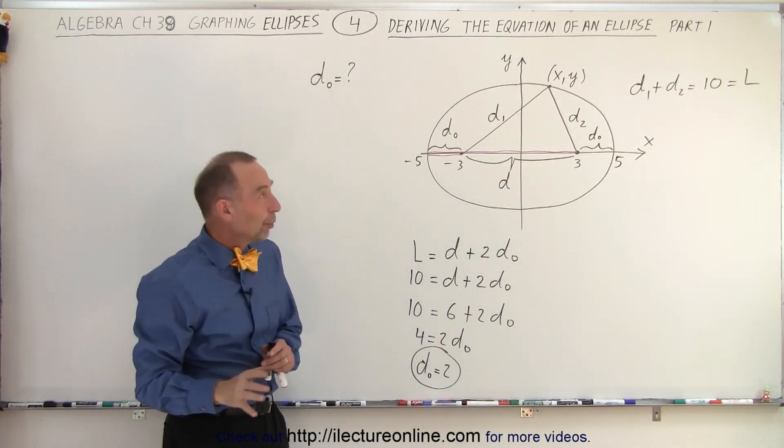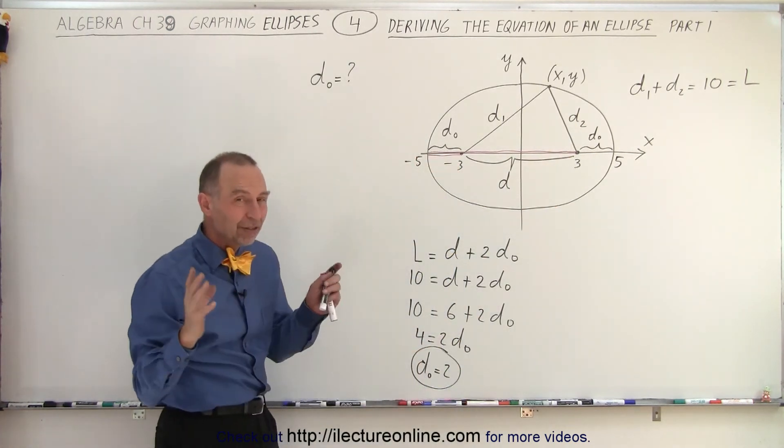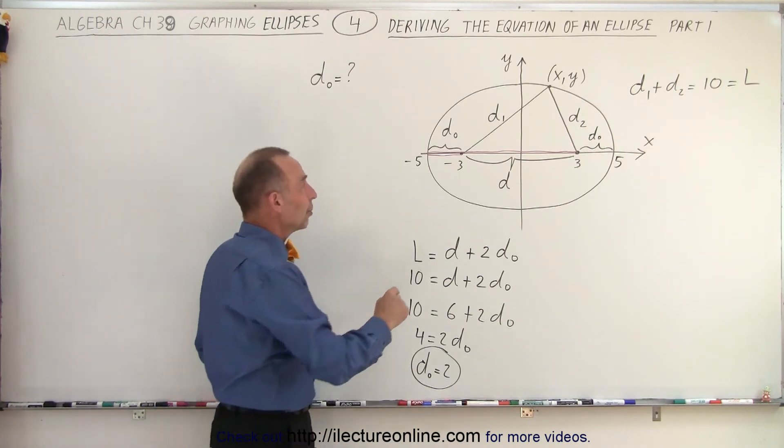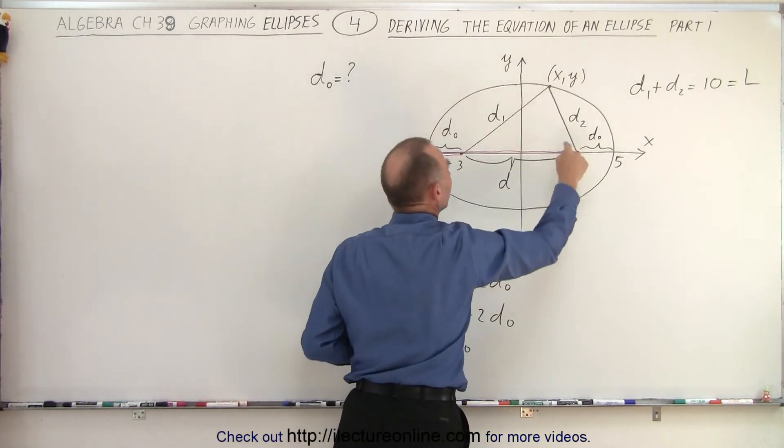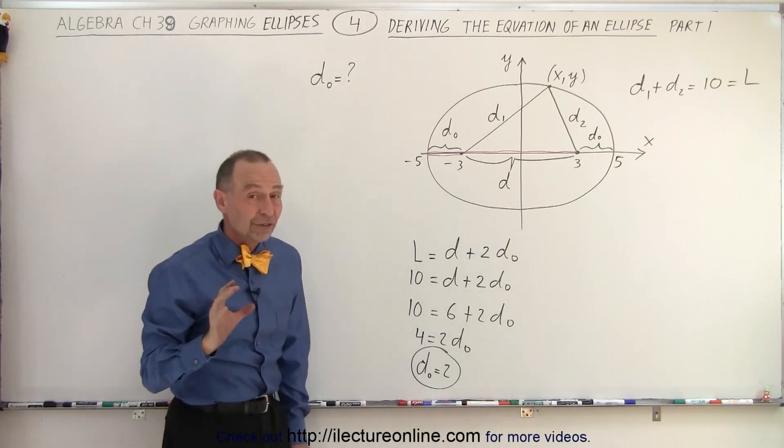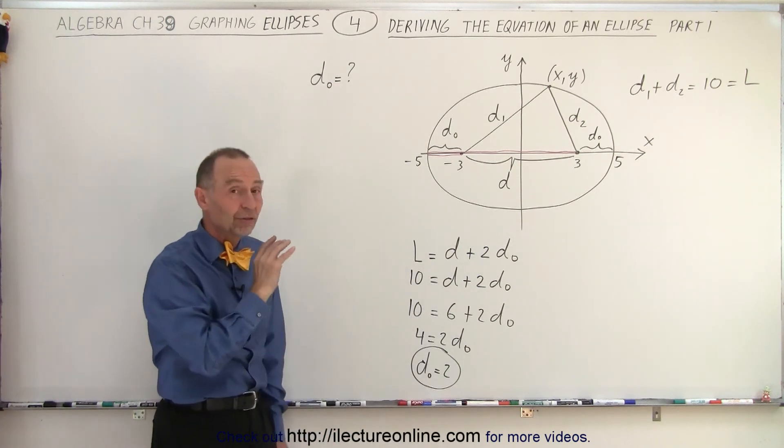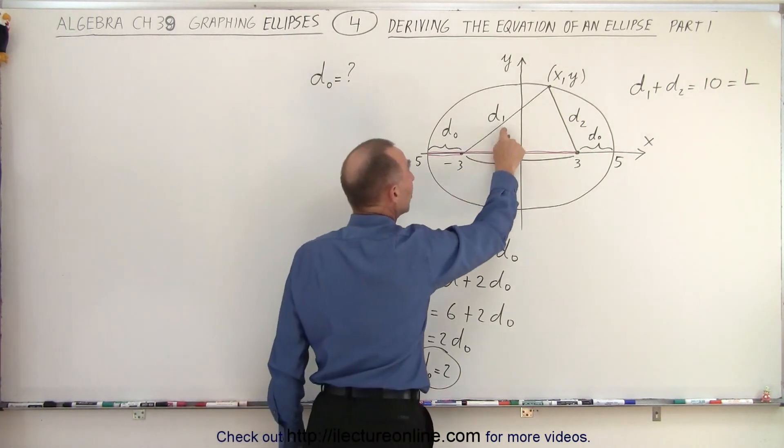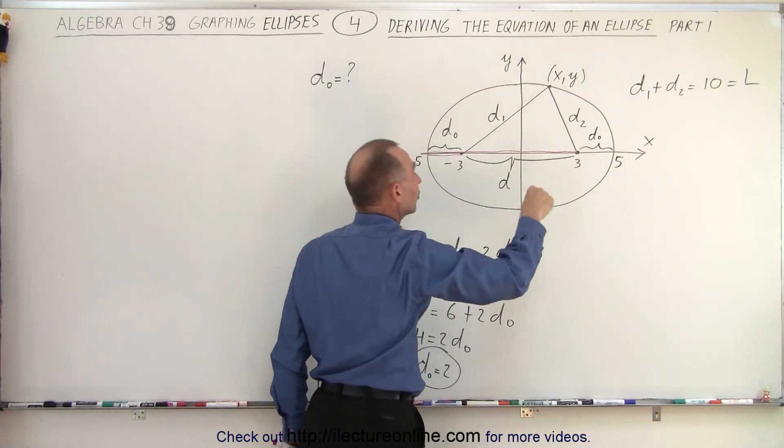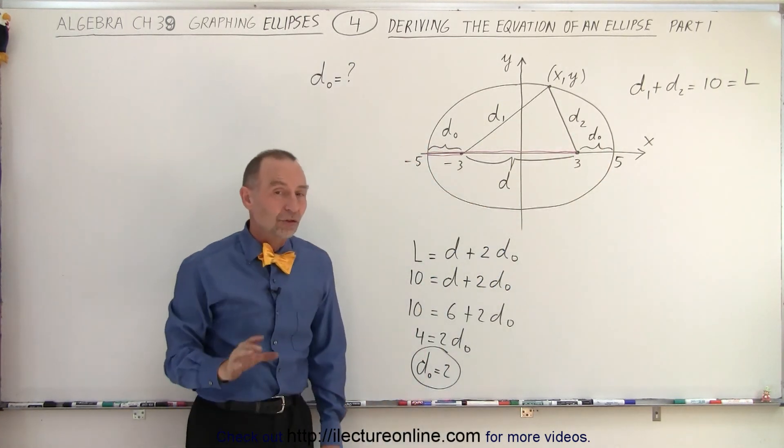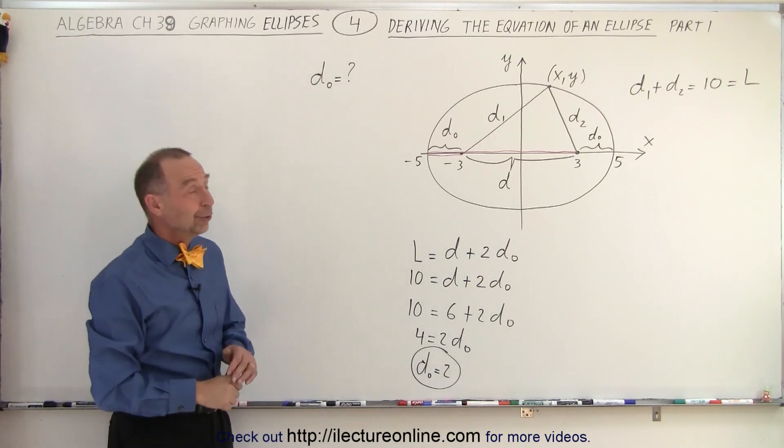Now, that's not as important in deriving the equation, but at least it gives you some sort of relationship between the quantities d1 and d2. In the next video, we're going to take the distance formula and the quantities d1 and d2 to actually come up with the equation that describes this ellipse. So stay tuned and we'll show you how to do that.